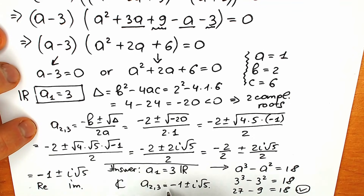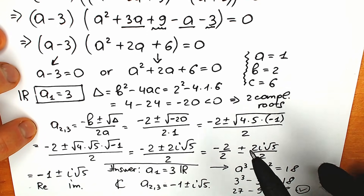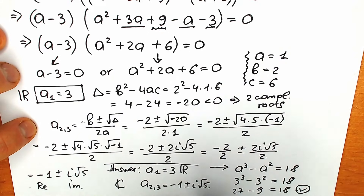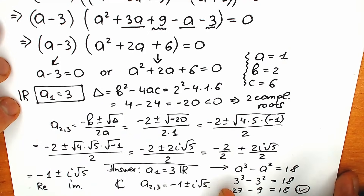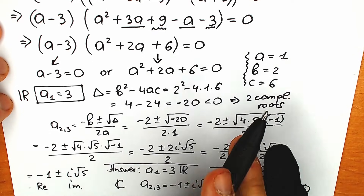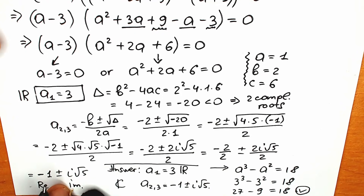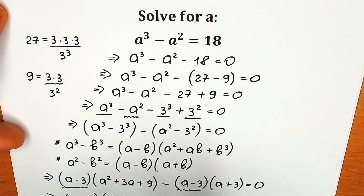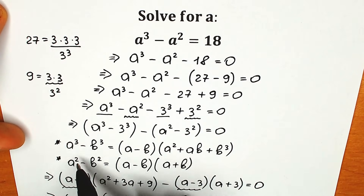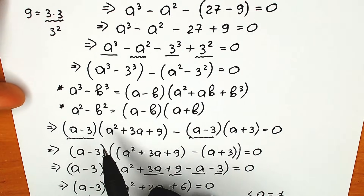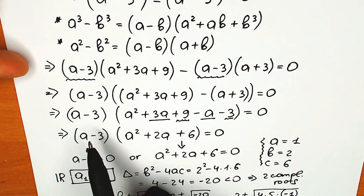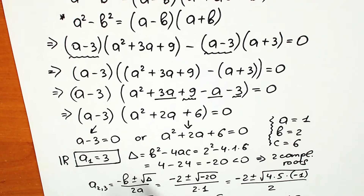If you solve this question by inspection, you can't find the complex number part — which is an extremely important part for a complete solution. So my quick recommendation: learn the Fundamental Theorem of Algebra. For a cubic equation, use this tricky substitution, remember these two formulas — difference of cubes and difference of squares — and then do basic calculations ending in a linear and a quadratic equation. I really hope you understand it, but if you still have any questions, write them in the comments below.